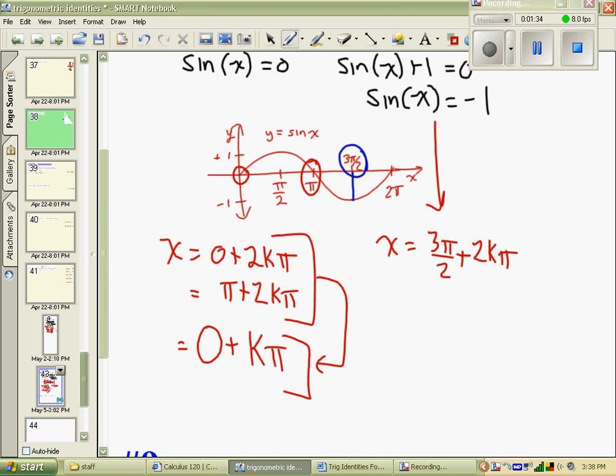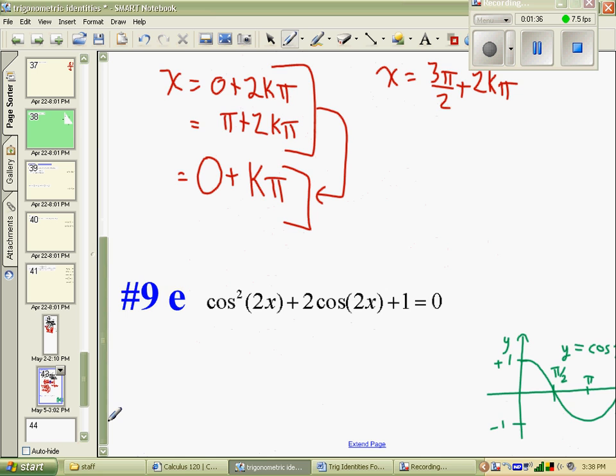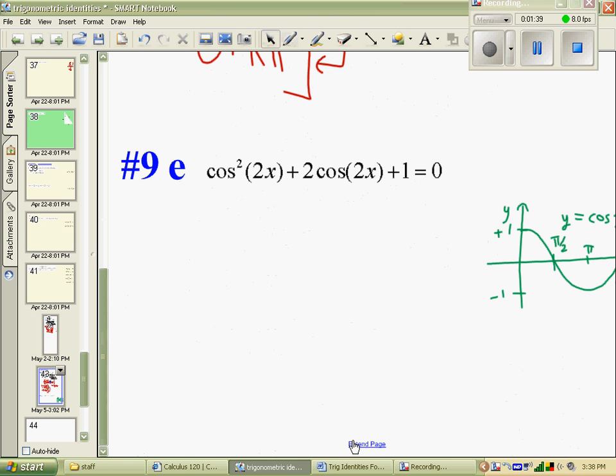Okay, so now we'll try and do 9e as well. So cosine squared of 2x plus 2 cosine of 2x plus 1 equals 0. I'm going to factor this expression, because it would factor the same as if you had a squared plus 2a plus 1 equals 0. That's a perfect square.